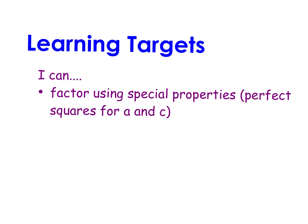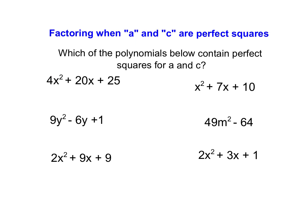In this video, we're going to learn a special factoring strategy that occurs when our A and C values are equal to perfect square values. The strategy we're going to be discussing can only be used when A and C are perfect squares. So what we're going to do for the six situations below is decide for which of these A and C are perfect squares.